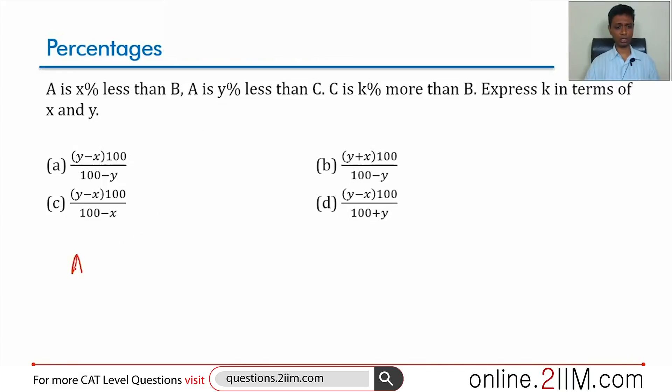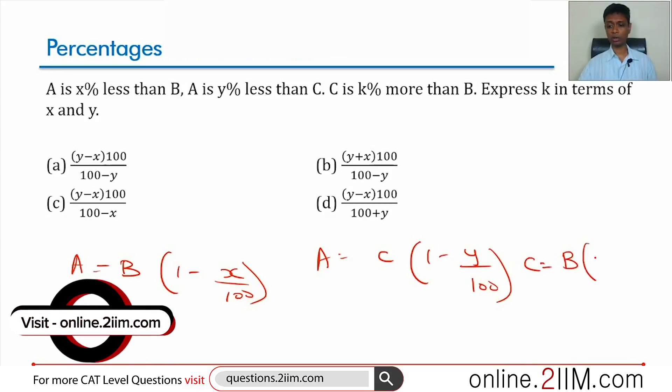A is x percent less than B, or A is B into 1 minus x by 100. A is y percent less than C, A is C into 1 minus y by 100. C is k percent more than B, C is B into 1 plus k by 100.